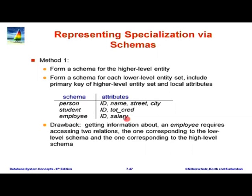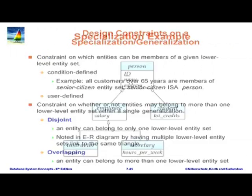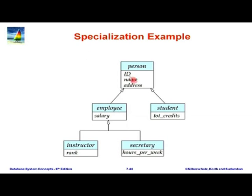The attributes vary in the two methods. In both methods, the top-level entity has all the attributes. Going back to the schema, the attributes for person were id, name, and address. So the person schema has id, name, and address. Employee has only salary, and student has only total credit.